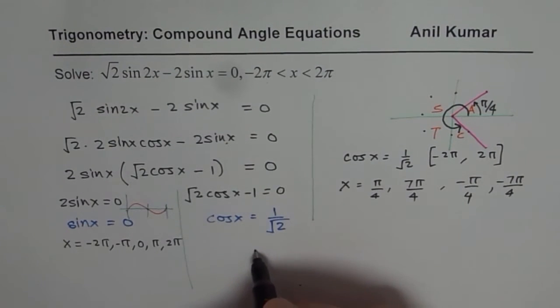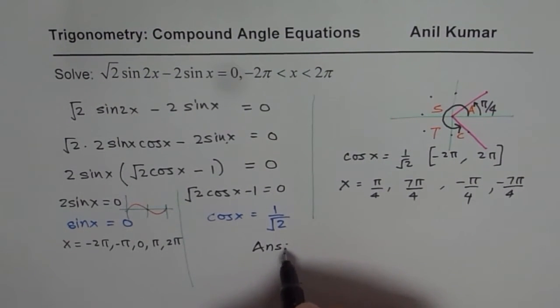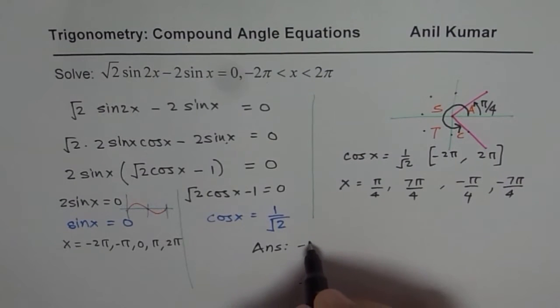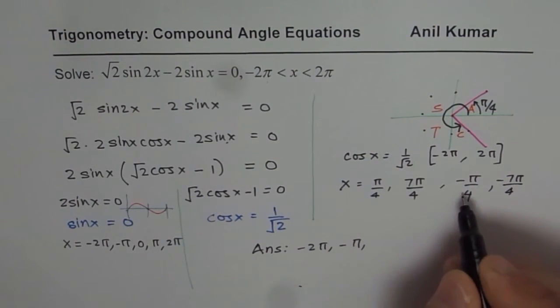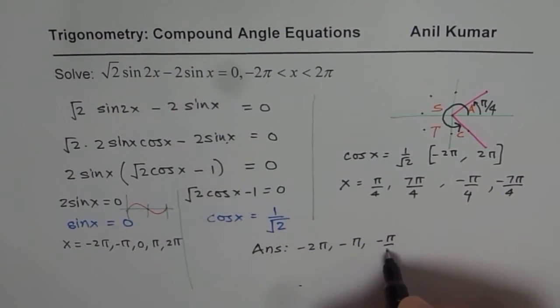Combining the two solutions, let's write our answer. So our answer is -2π, -π and negative values. Let me write them first here. -7π/4.